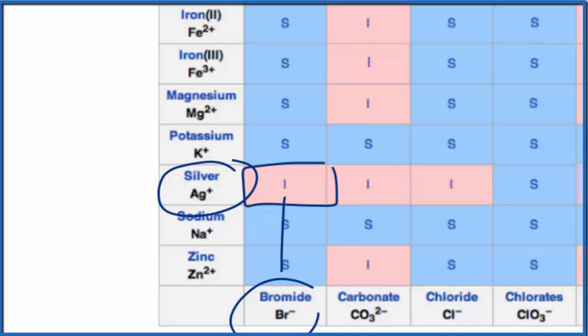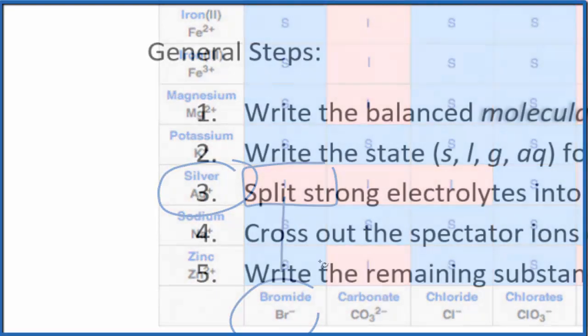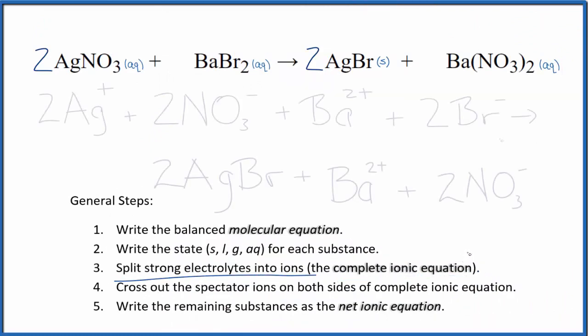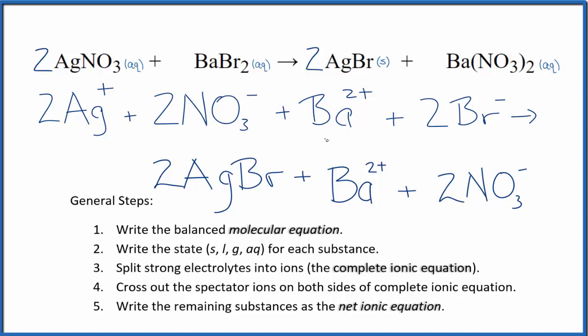Now we can split the strong electrolytes into their ions for the complete ionic equation, and that looks like this. So this is the complete ionic equation.